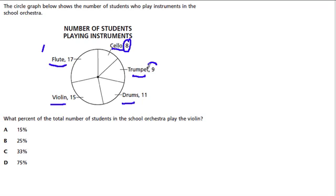So, 8 are playing cello, 9 trumpet, 11 drums, 15 violin, and 17 flute. And, so this is the school orchestra, and we want to know what percent of the total number of students in the school orchestra play the violin.